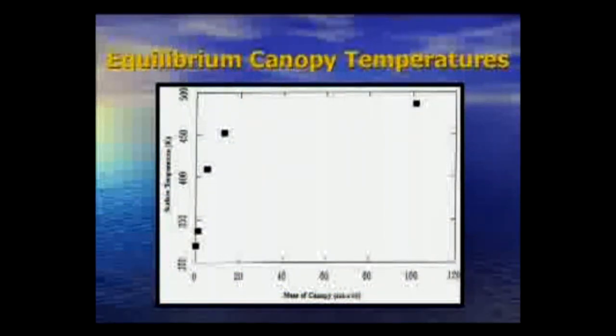So water vapor is a really good greenhouse gas. That's where my student Dave left his model. He had some suggestions about what we might do, but it was a little discouraging. He tried this at a number of different canopy depths and had a final surface temperature of around 300-some degrees Kelvin. If you put more in, it got hotter and hotter.